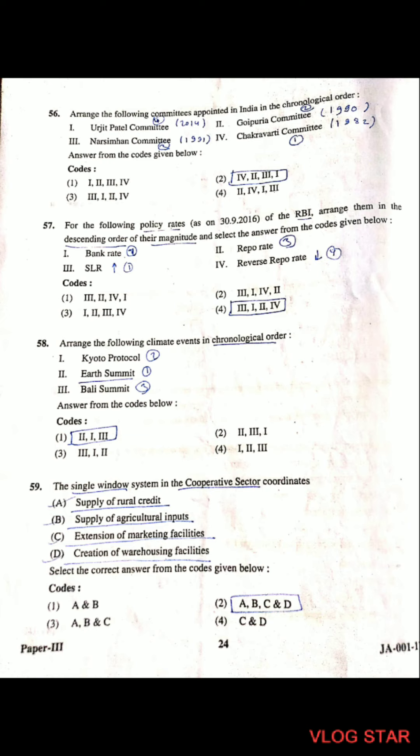Question 59: The single window system in the cooperative sector coordinates with all four aspects: supply of rural credit, supply of agricultural inputs, extension of marketing facilities, and creation of warehousing facilities.